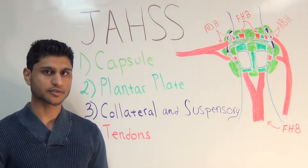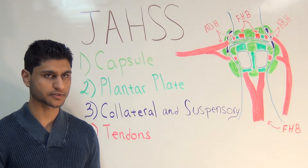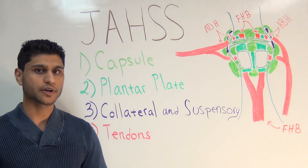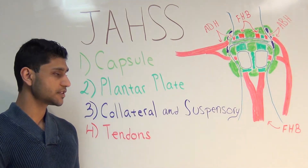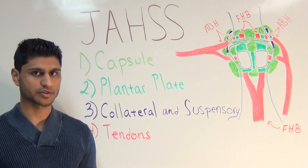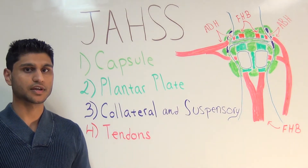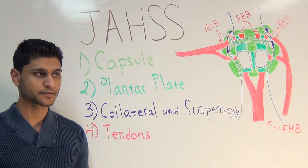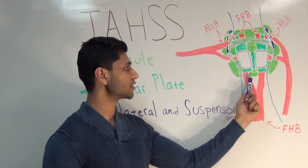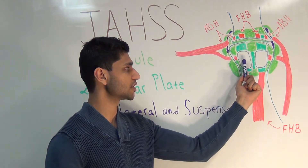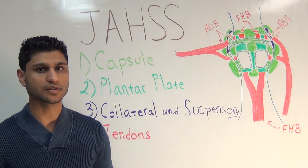The first MTP joint is surrounded by a fibrous capsule that extends from the metatarsal neck to the base of the proximal phalanx. On the plantar aspect of this capsule, there is a fibrocartilaginous thickening known as the plantar plate. The plantar plate and the capsule are actually just one continuous structure, so don't think of them as two separate entities. The sesamoids are embedded within the plantar plate and divide the plantar plate into different regions. You have the phalangeal sesamoidal ligament, the metatarsal sesamoidal ligament, and the intersesamoidal ligament — these are not true ligaments, they're really just different areas of the plantar plate.